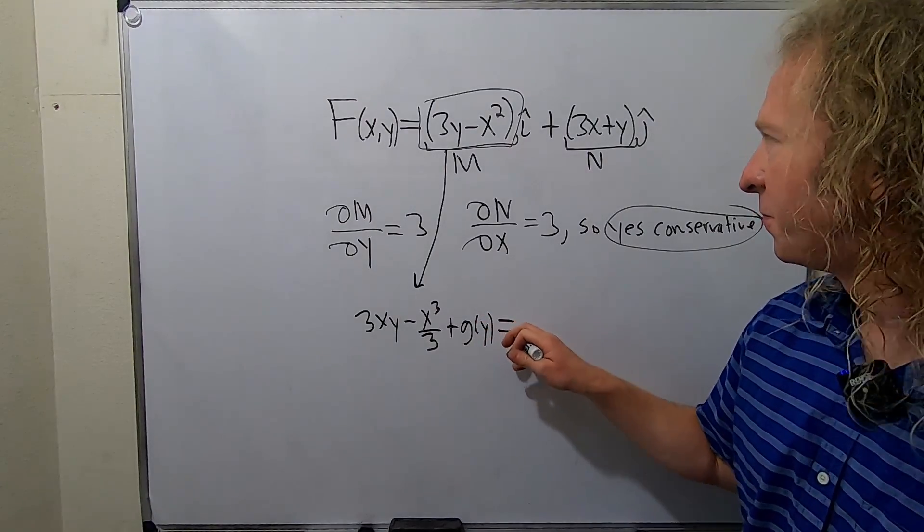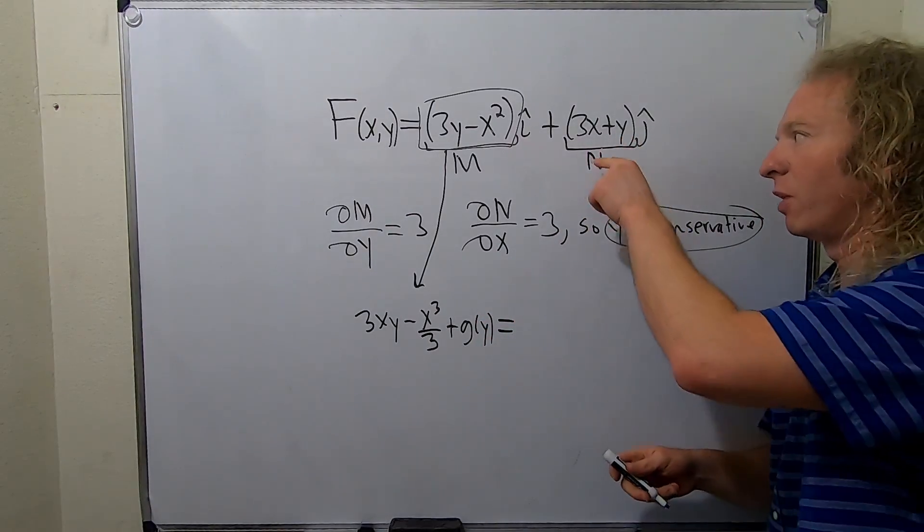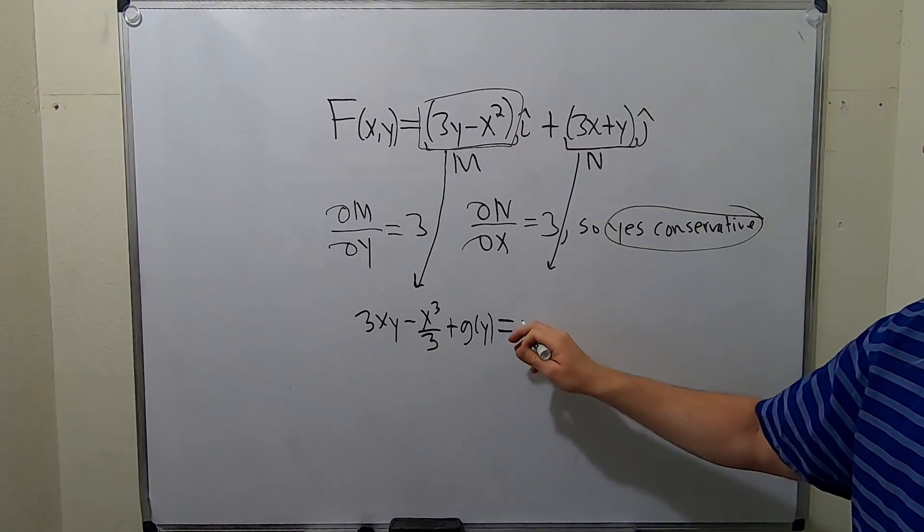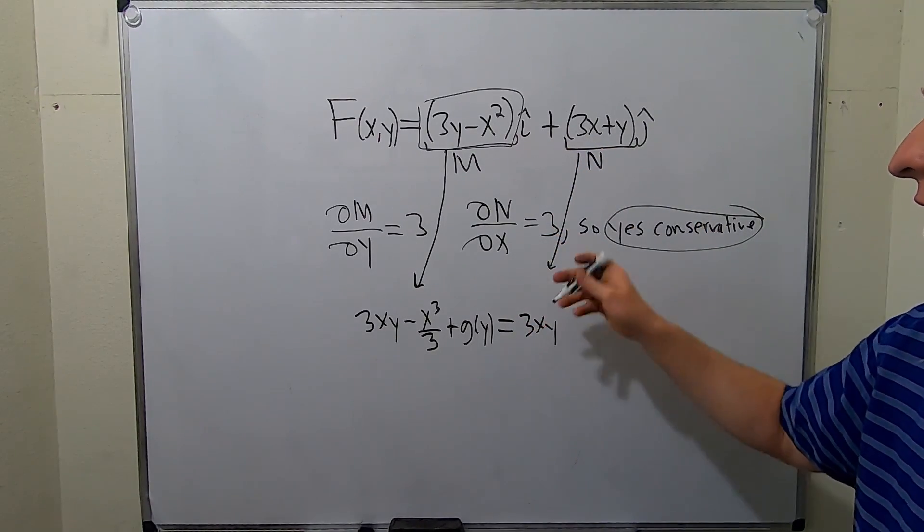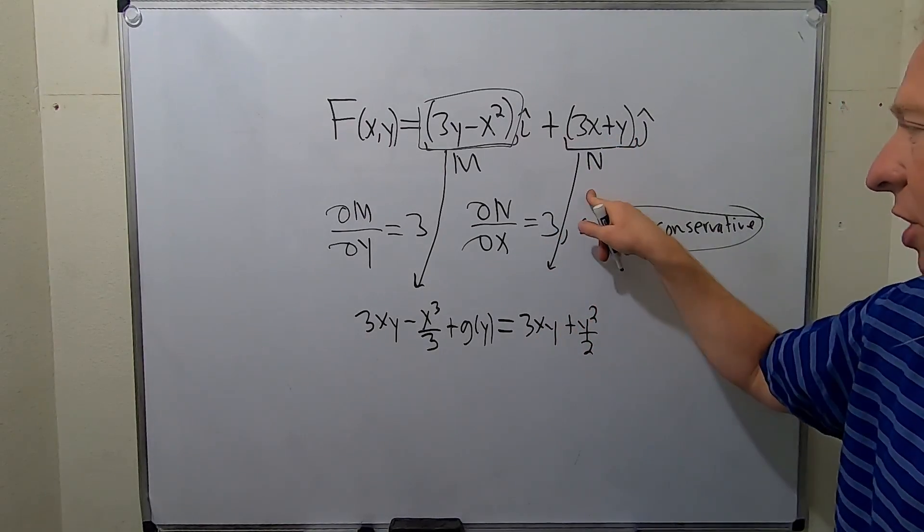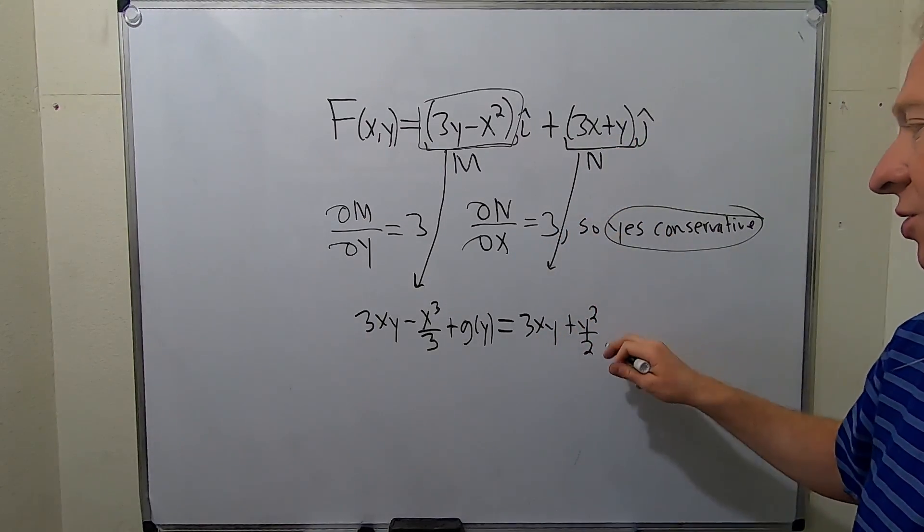And this must be equal to this, and we're going to integrate this now with respect to Y. So we would get 3XY. Integrate with respect to Y we get Y²/2. We integrate it with respect to Y so we have an unknown function of X.